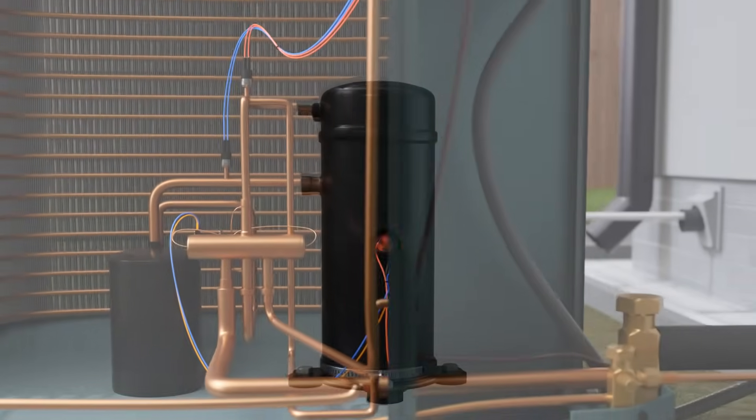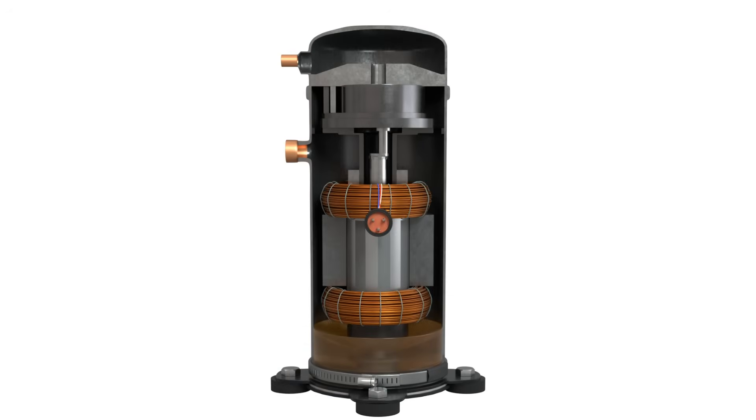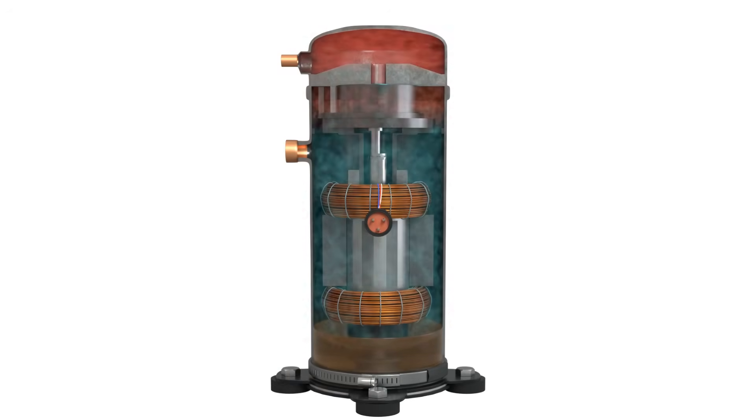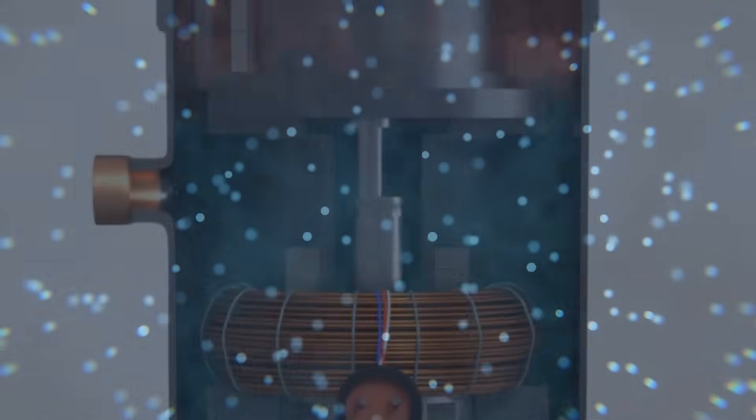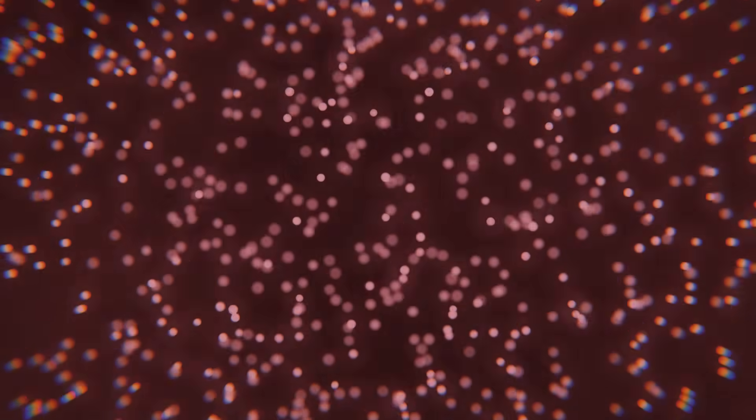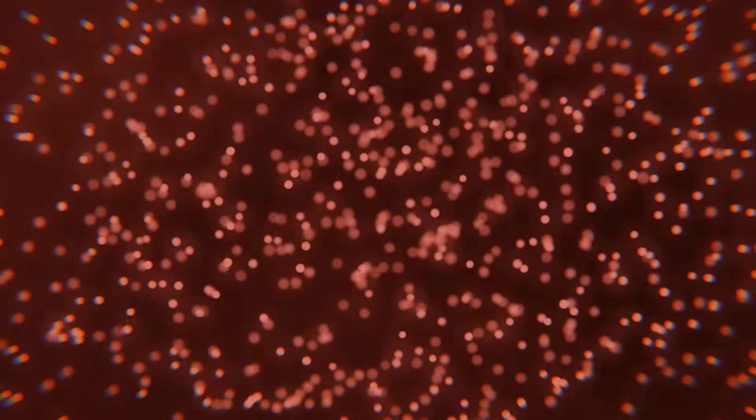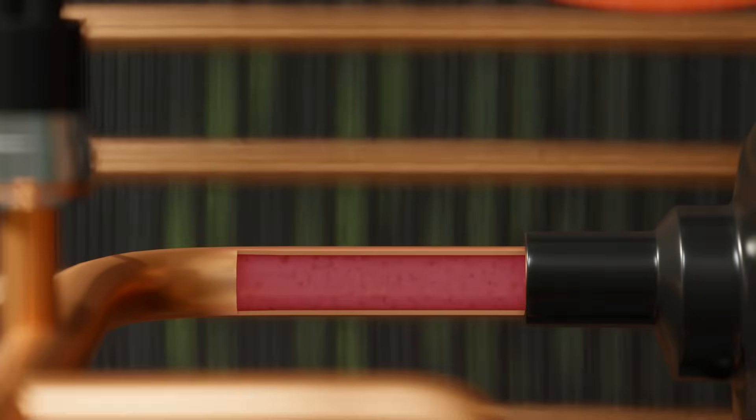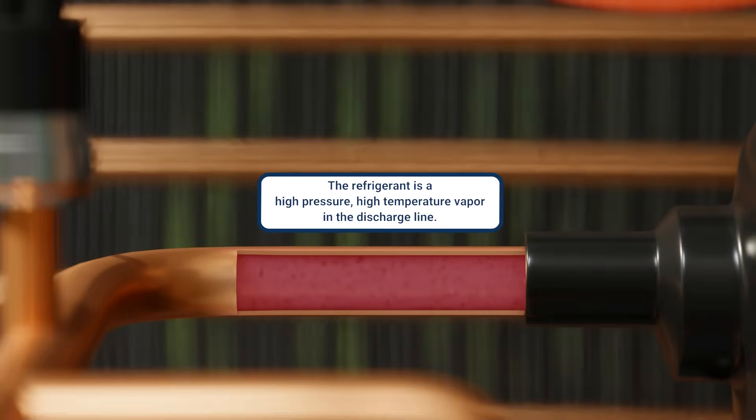Back to the compressor again. As the refrigerant enters the compressor, it is a cool vapor, and the molecules are moving pretty slow. Inside the compressor, the molecules of this cool gas get smashed together, so they move faster and get hotter. Remember, higher pressure equals higher temperature. When the refrigerant leaves the compressor, it's hot and under high pressure.